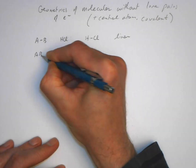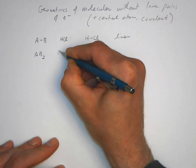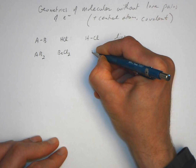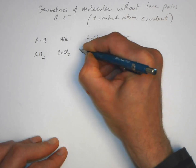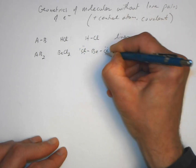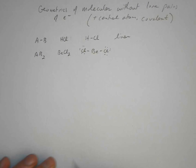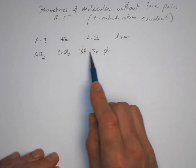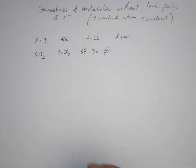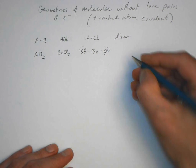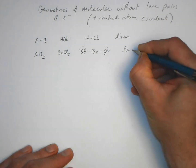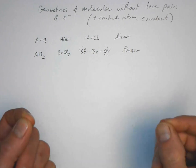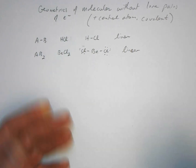For AB2, an example might be beryllium chloride, BeCl2. Drawing its Lewis structure, we have two bonding pairs of electrons and no lone pairs on the central atom. The shape is also linear — we have a central atom with a bond on each side, giving a 180° bond angle.